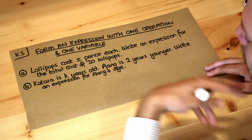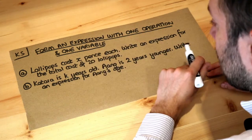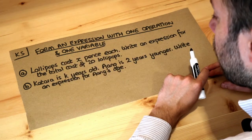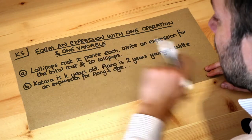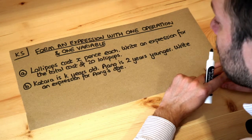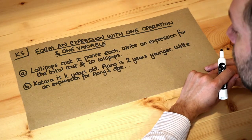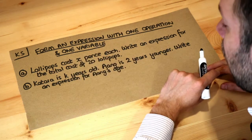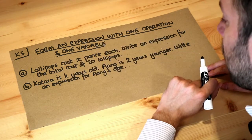Let's think about how we would do this with normal numbers. If each lollipop cost 5 pence and we had 20 lollipops, how would you find the total cost? We'd have 20 lots of 5p, so we'd do 20 times 5.